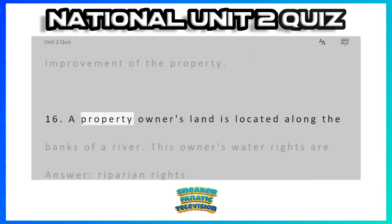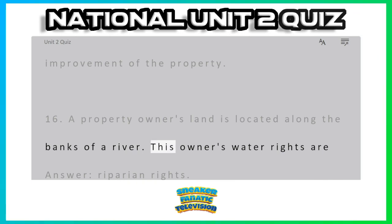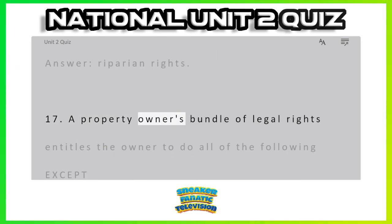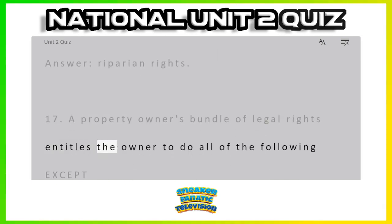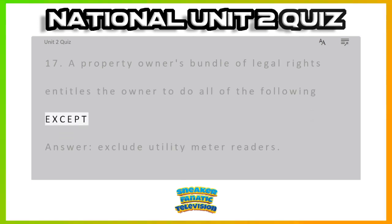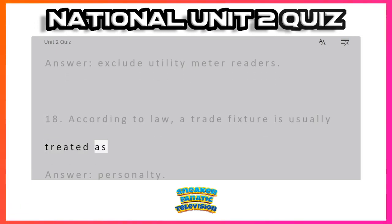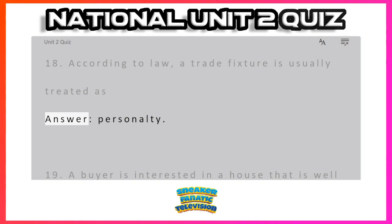Question 16: A property owner's land is located along the banks of a river. This owner's water rights are — Answer: riparian rights. Question 17: A property owner's bundle of legal rights entitles the owner to do all of the following except — Answer: exclude utility meter readers. Question 18: According to law, a trade fixture is usually treated as — Answer: personality.